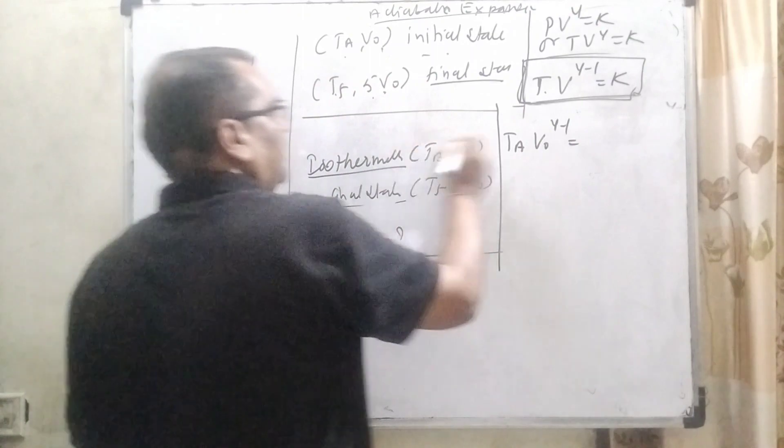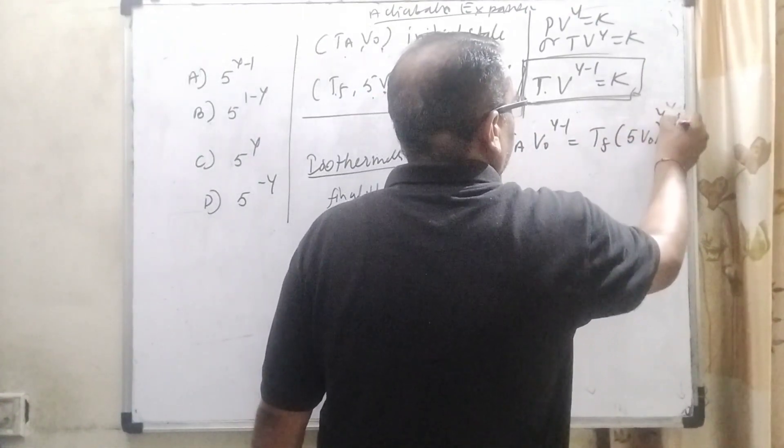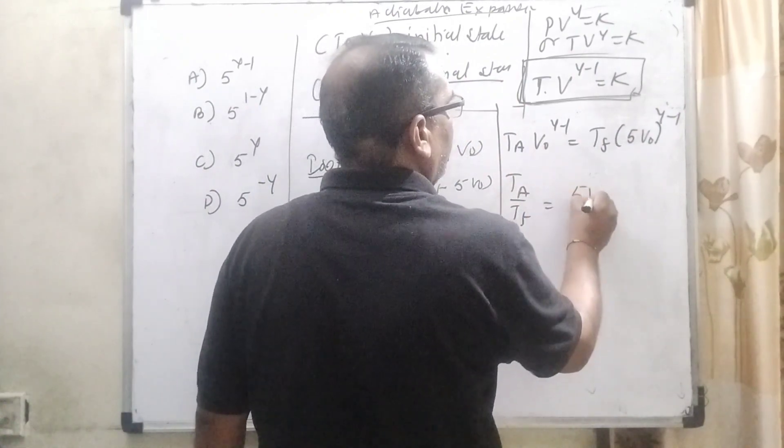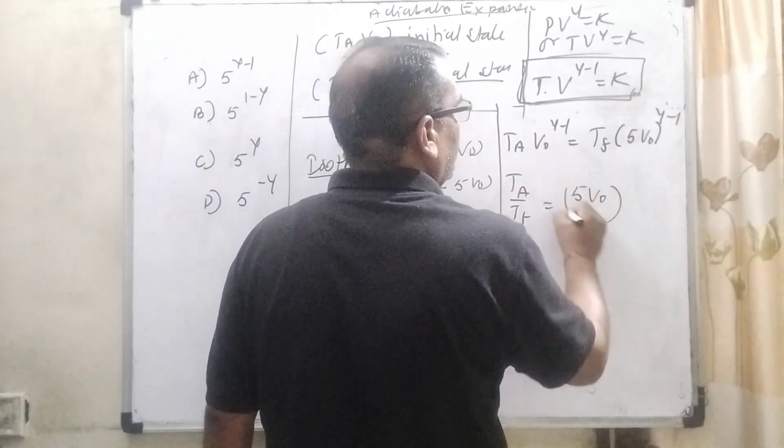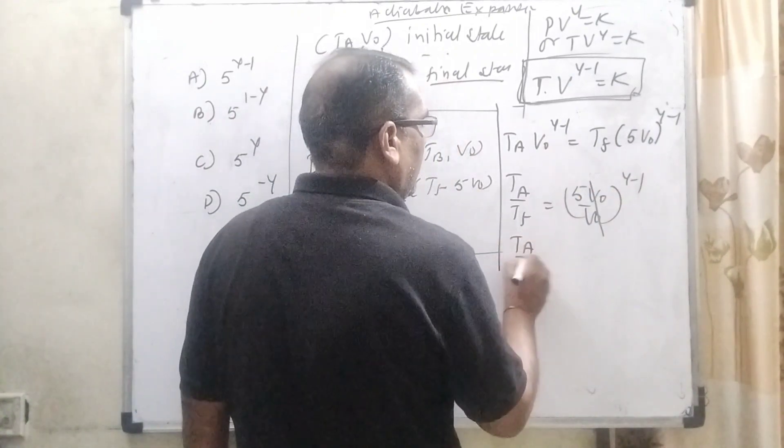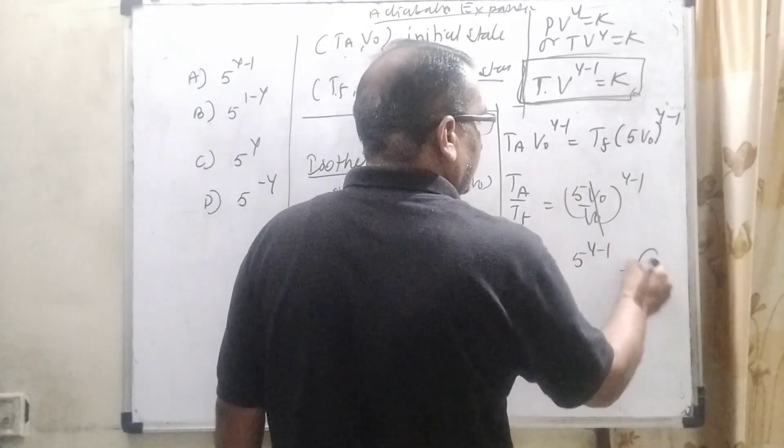The final state is given as (TF, 5V0) raised to the power (gamma minus 1). So TA upon TF equals 5V0 upon V0 raised to the power (gamma minus 1). V0 cancels out, then TA upon TF equals 5 raised to the power (gamma minus 1). This is the first equation.